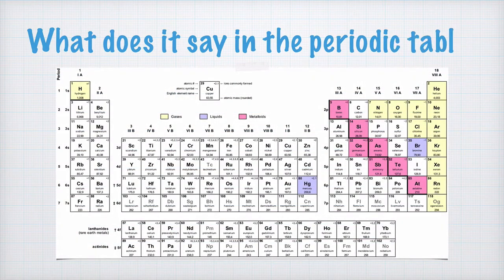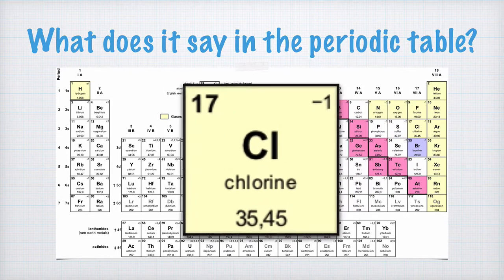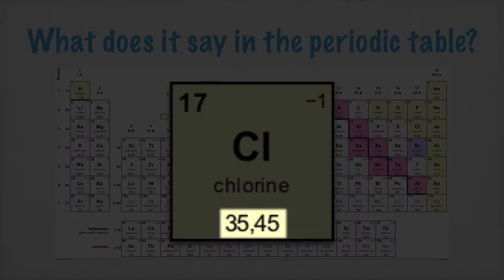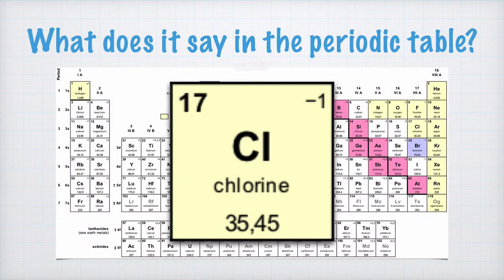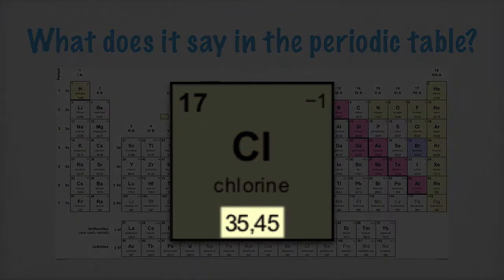But what does it say in the periodic table? If we look at chlorine here, we can see that its atomic number is 17. But what's written below is not the mass number, but the atomic mass. So how come the atomic mass for chlorine is 35.45U? Well, this is because the atomic mass indicated in the periodic table is the average mass of a chlorine atom. There are two chlorine isotopes, chlorine-35 and chlorine-37. They don't weigh the same, and that's why the average atomic mass of chlorine is somewhere between 35 and 37U.